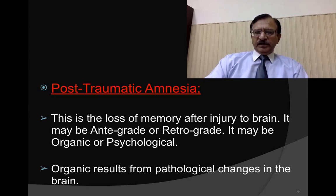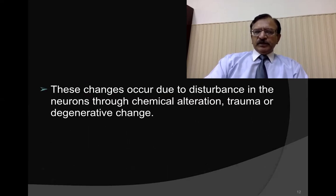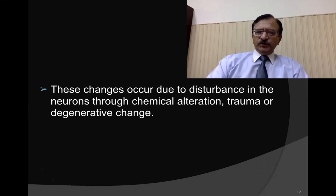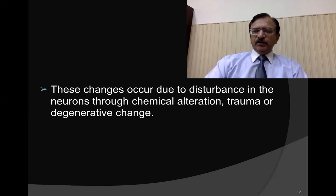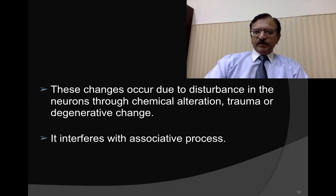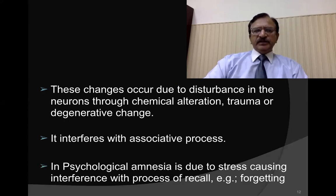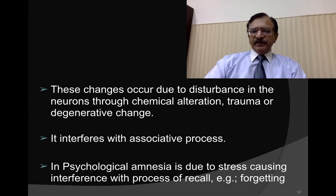Organic amnesia results from pathological changes in the brain due to damage to neurons, caused by altered chemicals present in trauma or degeneration. This interferes with the associative process. Psychological amnesia is due to stress, causing interference in the process of recall — that is, forgetting.